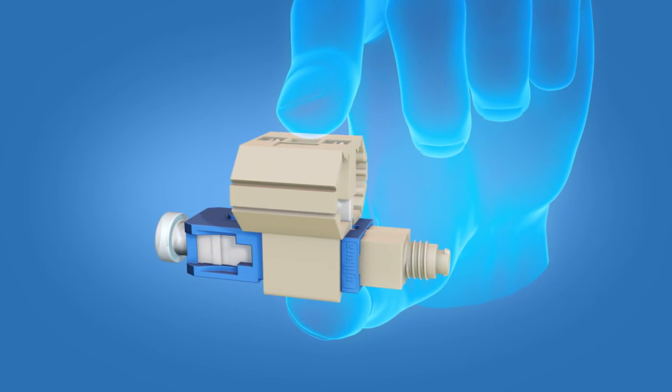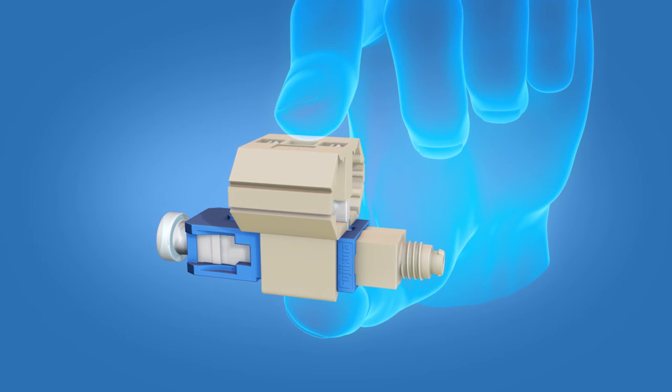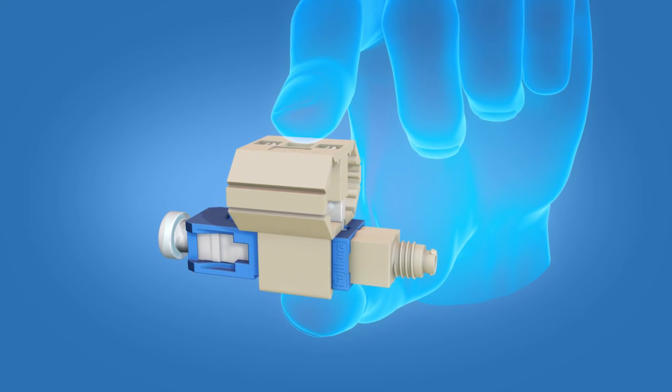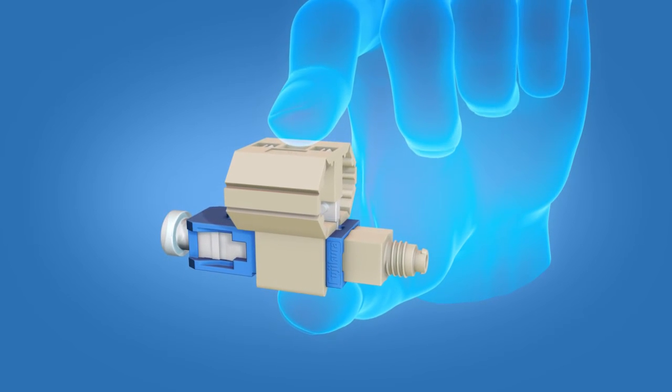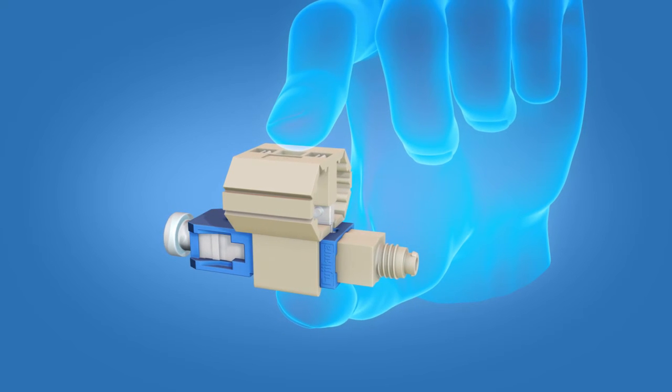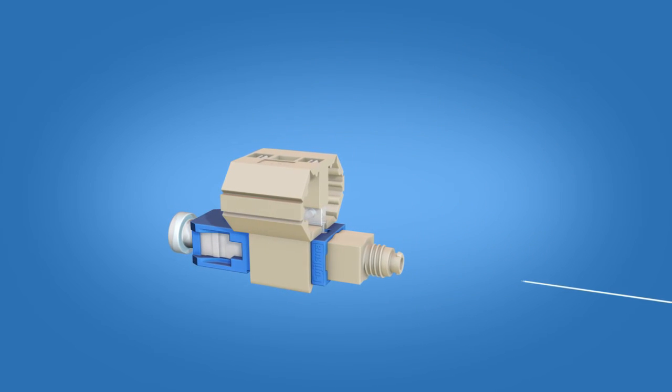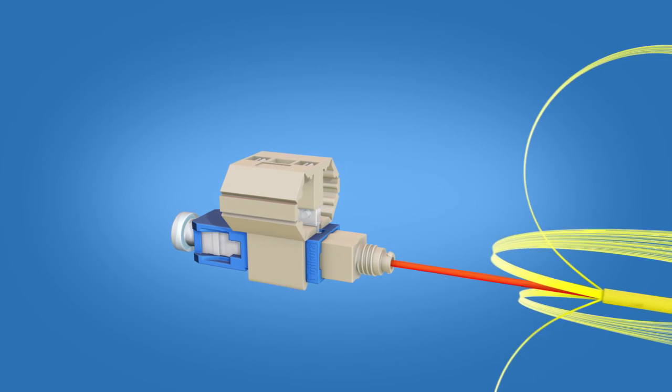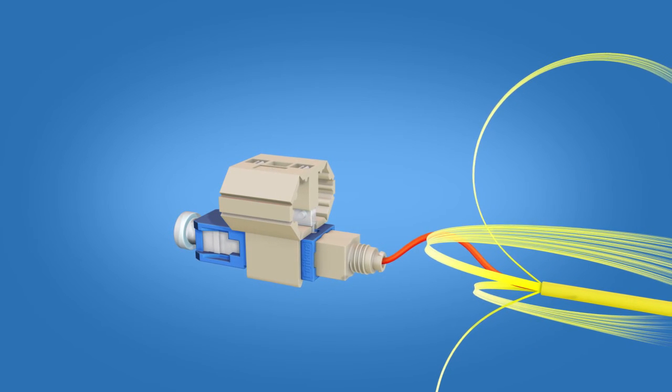Next, take the Fast SC connector and squeeze the top and bottom of the wedge to ensure that it is engaged. Insert the fiber into the connector. Create a slight bend to maintain contact.